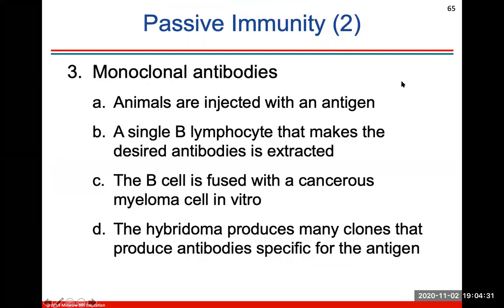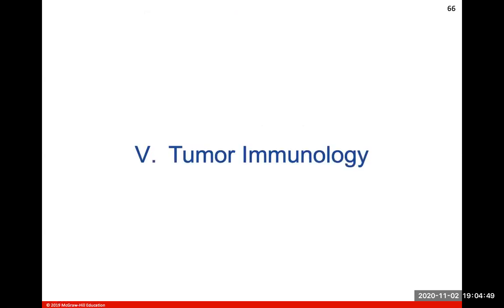Monoclonal antibodies — talking about passive immunity: animals are injected with an antigen, a single B lymphocyte that makes the desired antibodies is extracted, the B cell is fused with a cancerous myeloma cell in vitro, and the hybridoma will produce many clones that produce antibodies specific for the antigen.